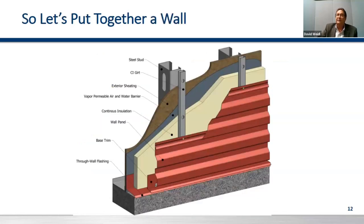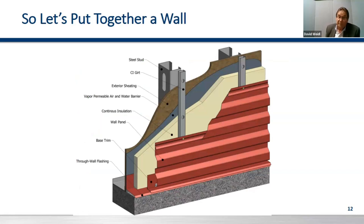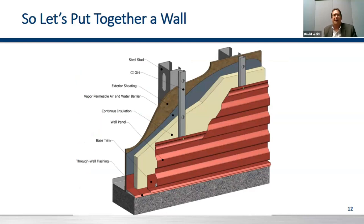Let's look at putting together a wall. You've got your framing system — whether masonry or steel stud — your exterior sheathing, then typically in standard construction you have your weather resistive barrier, continuous insulation, some type of framing system out past that continuous insulation, and then your panel system.